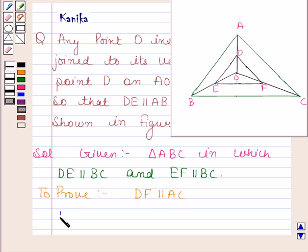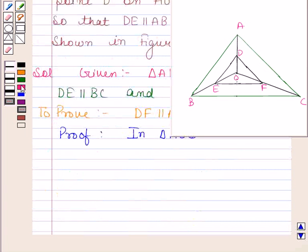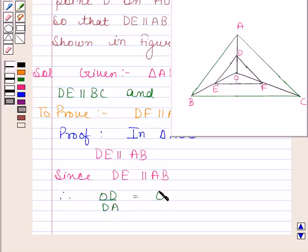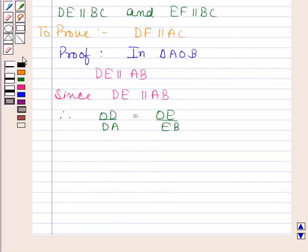Now let us begin with the proof. In triangle AOB, DE is parallel to AB. Since DE is parallel to AB, therefore OD by DA is equal to OE by EB.